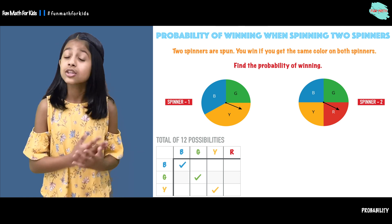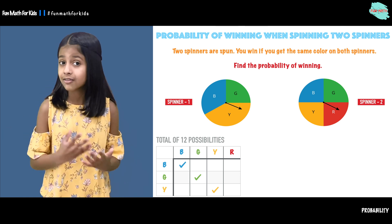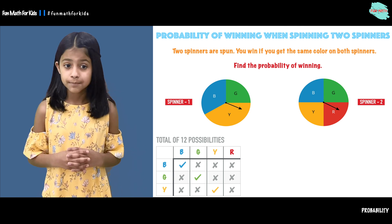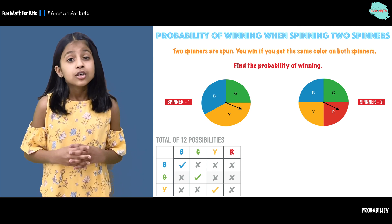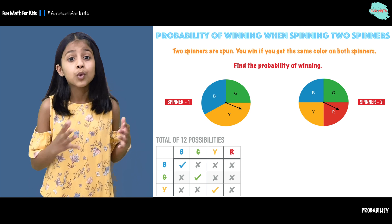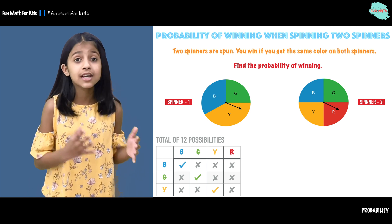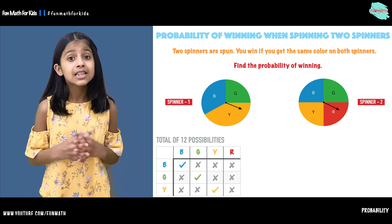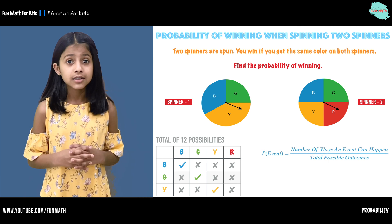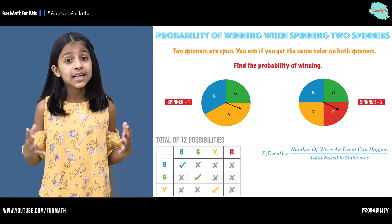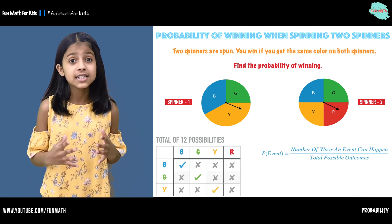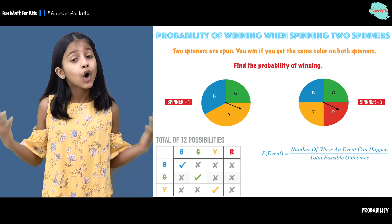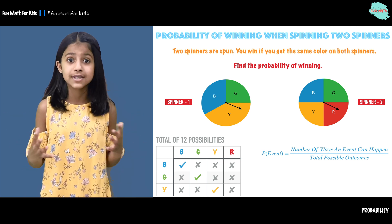If you get any of the rest of the possibilities you will lose the game. Now let's talk about the probability of winning. The formula is: the probability of an event is the number of ways an event can happen over the total possible outcomes.